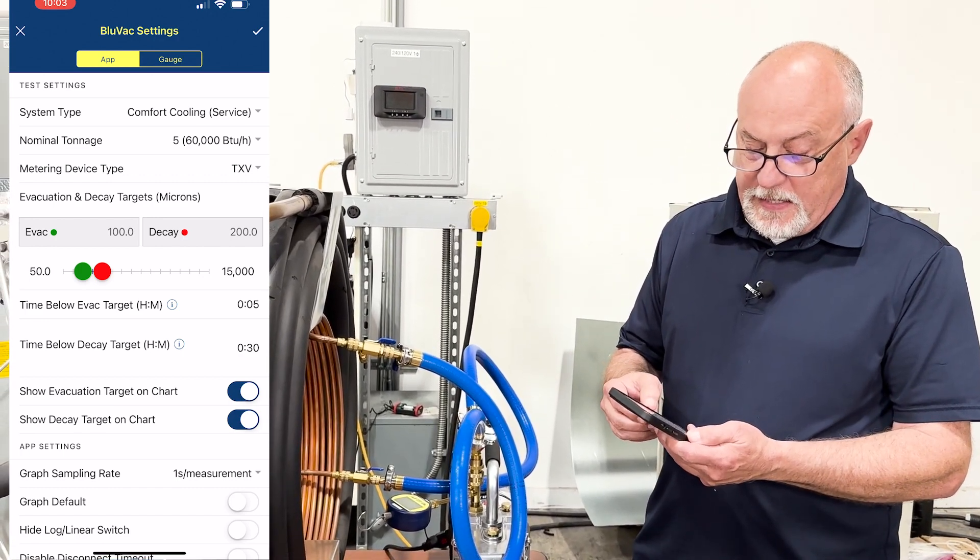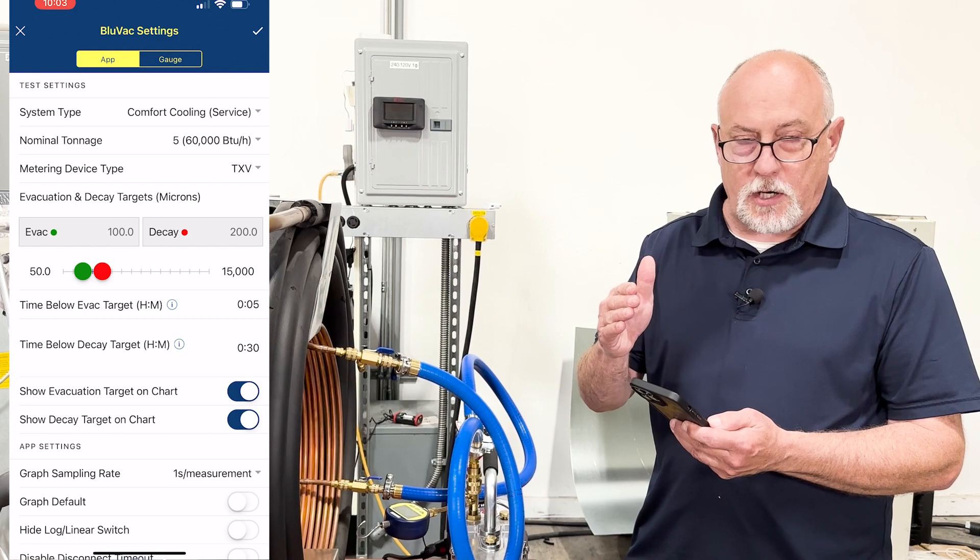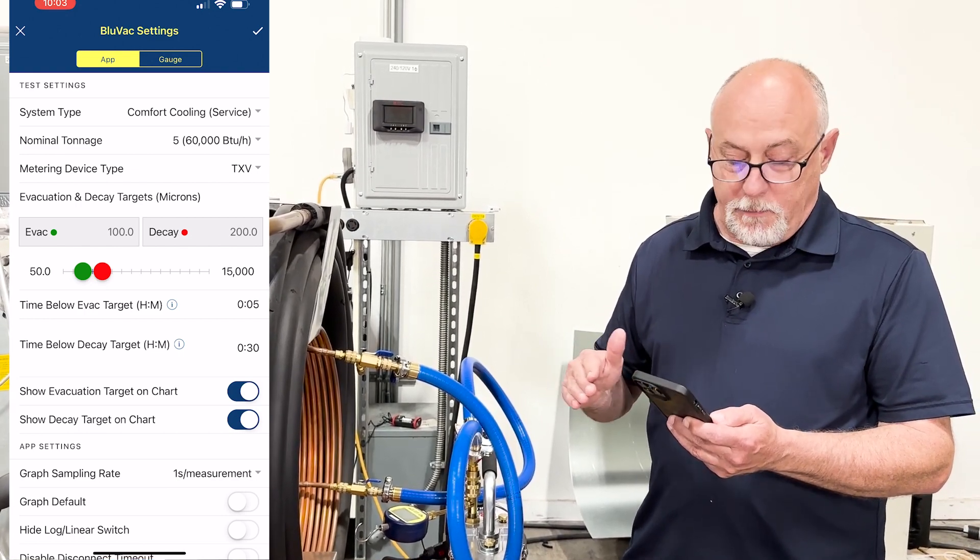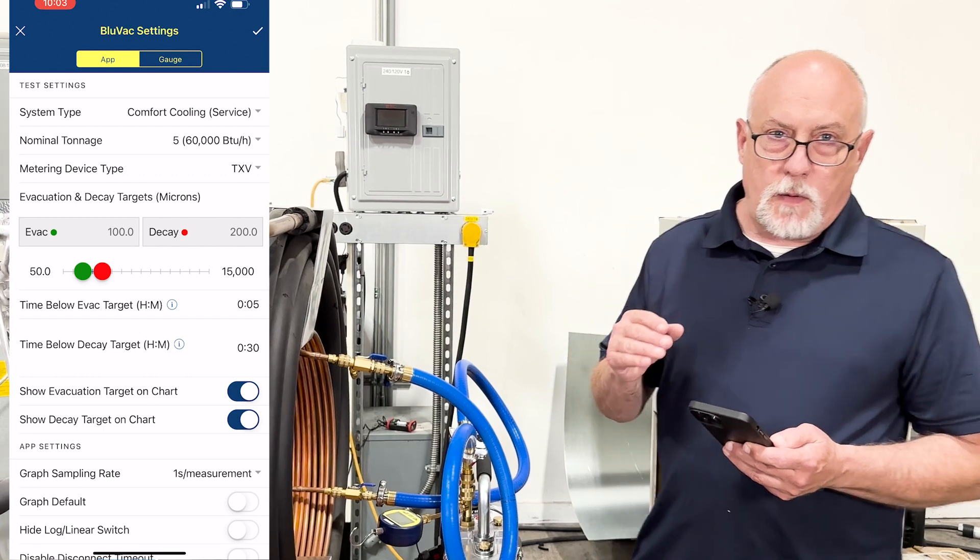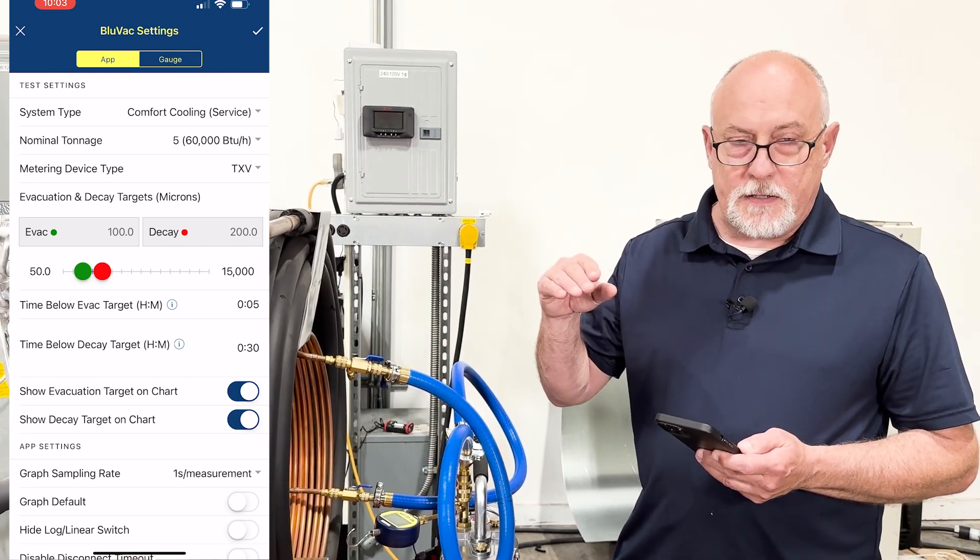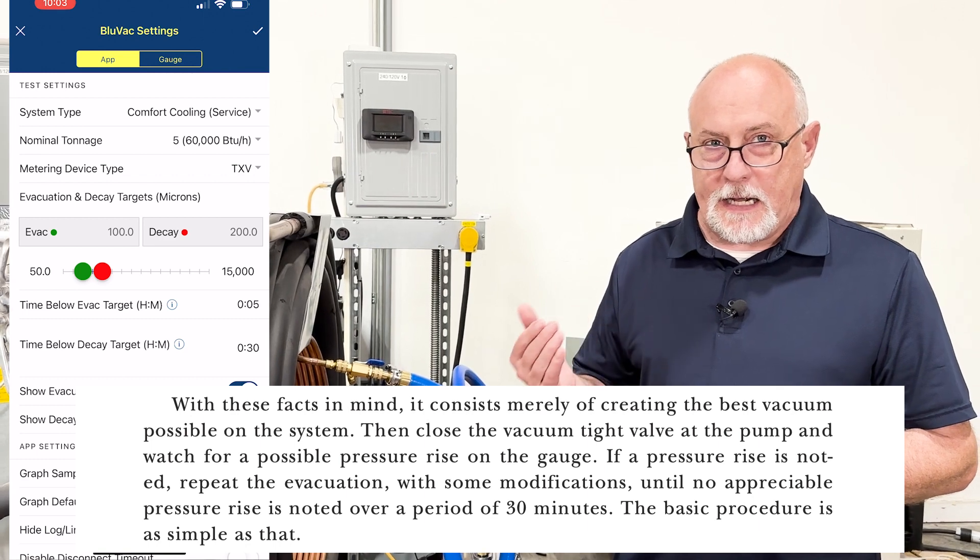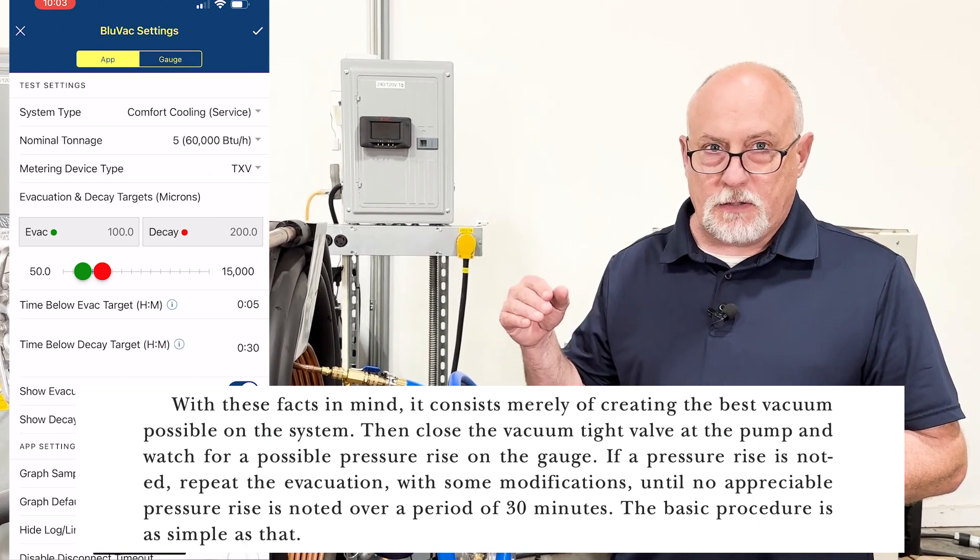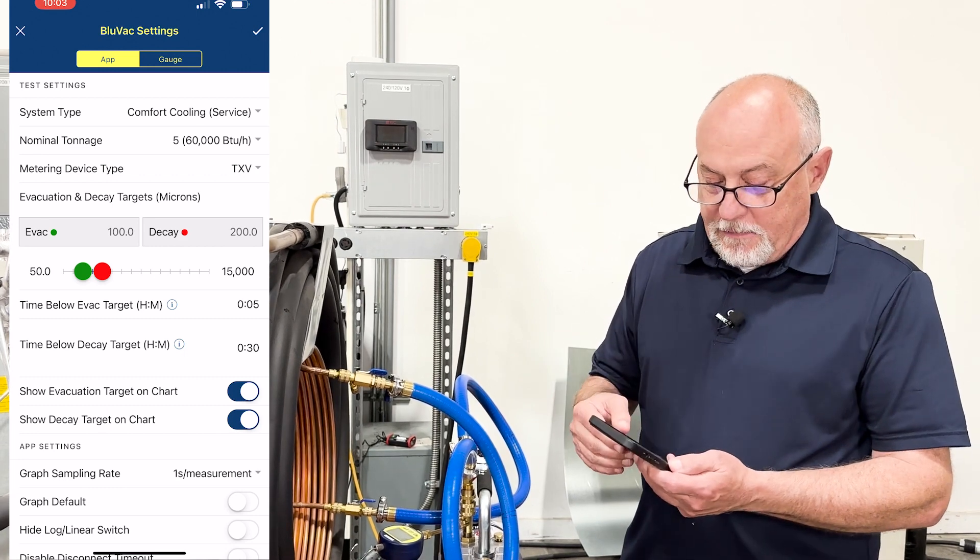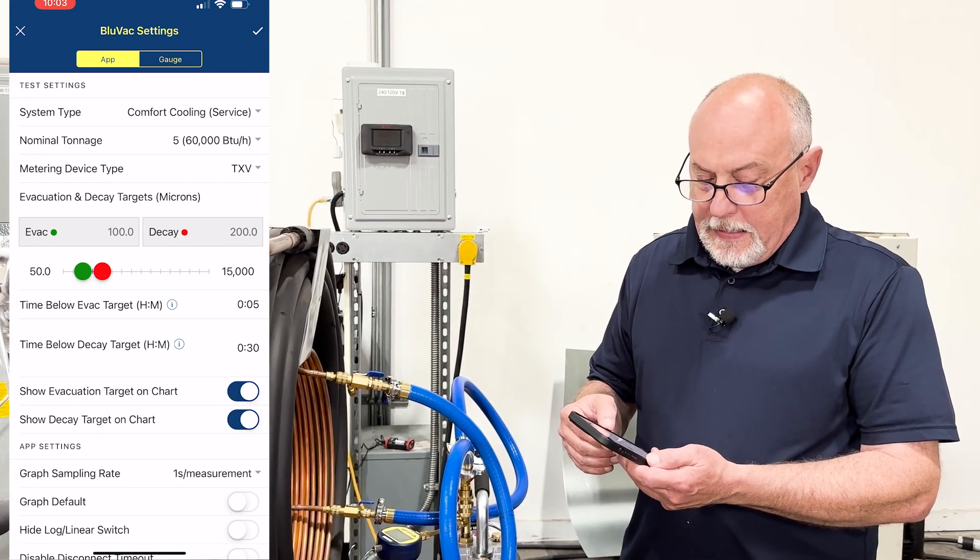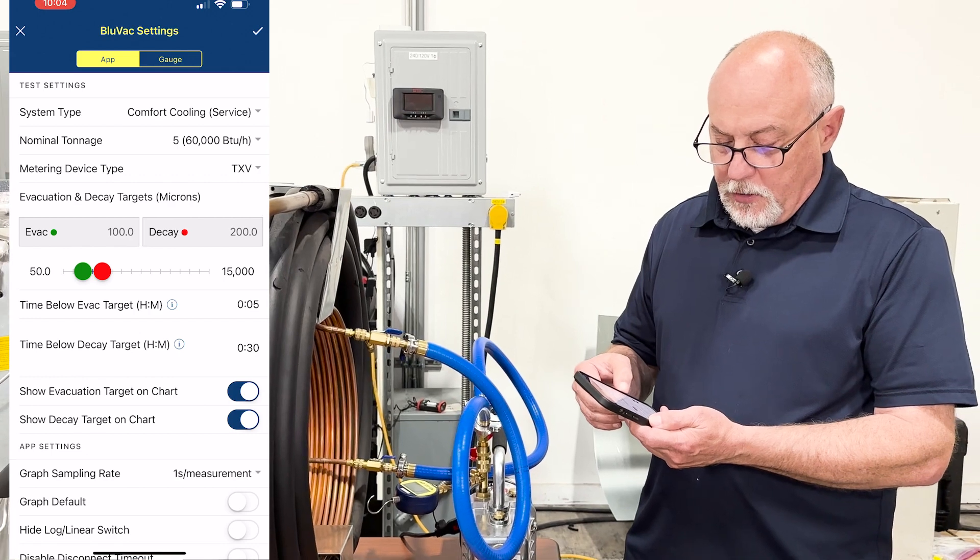Now there's a time below target setting, which I have set at five minutes. So that means when the graph is plotting down, when it hits the 100 micron target, we're going to hold below that for five minutes and I'll pull down below 100 microns. And then I have my time below decay target or my decay time set for 30 minutes. Now what we want to do with this is we want to make sure that there's no appreciable rise after 30 minutes. Back in the day, we'd actually have to wait 30 minutes. And the BlueVac app has an algorithm in it that actually watches the rise over run and can tell you in about 30 seconds to a minute if you're going to pass that 30 minute decay test. So I have it set, again, 100 for the target and I have it set at 200 for the decay, show evacuation target on the chart, five minutes below the target and 30 minutes for the decay.